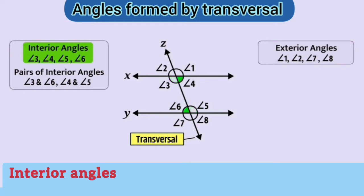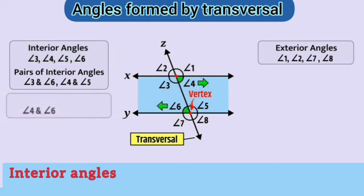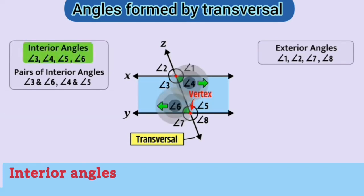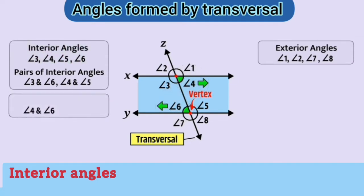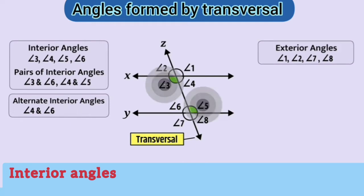We know that these are interior angles. Here, angle 4 and angle 6 have different vertices. Both are present on the inner side of the two lines and they are on opposite sides of the transversal. Such angles are called alternate interior angles. The other pair of alternate interior angles is angle 3 and angle 5.